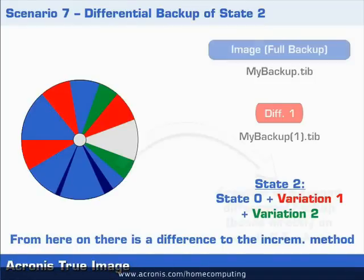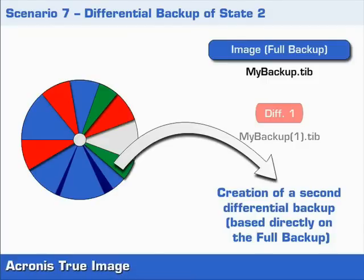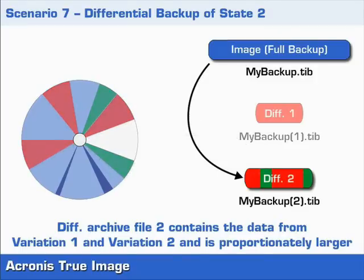The second Differential Backup is also based on the last full backup as was the first, but it doesn't take into account the in-between data states as does an incremental backup. The Differential Backup is based therefore only on the current data state and the original full backup. In other words, the second Differential Archive file contains the changes made in the two incremental backups. The size of this file is therefore larger than an incremental backup file at this stage. In fact, the second Differential Archive file is the same size as the combined size of the two corresponding incremental backups.